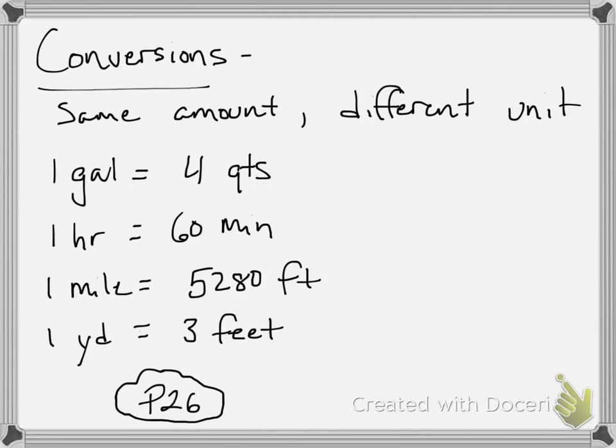We also said conversions. When we do conversions, it's the same actual amount, we're just using a different unit. Here are a few common ones. 1 gallon is equal to 4 quarts. 1 hour is equal to 60 minutes. 1 mile is equal to 5,280 feet. 1 yard is equal to 3 feet.